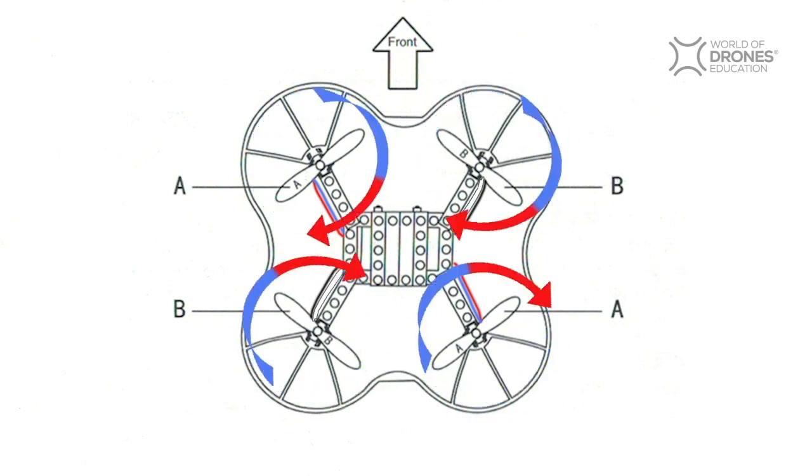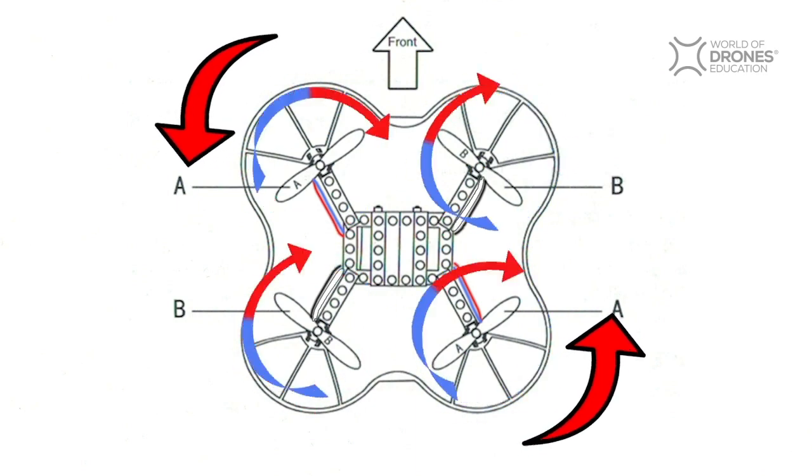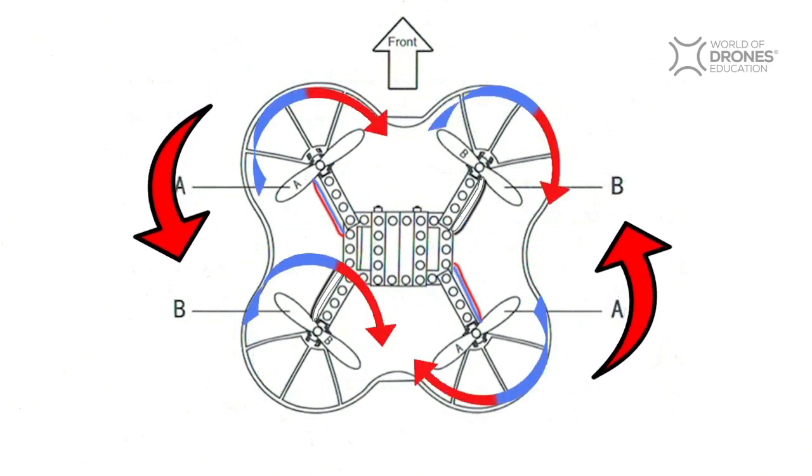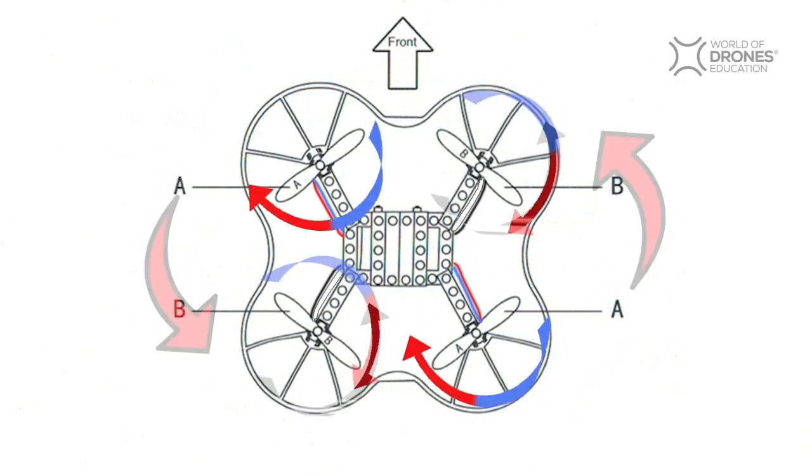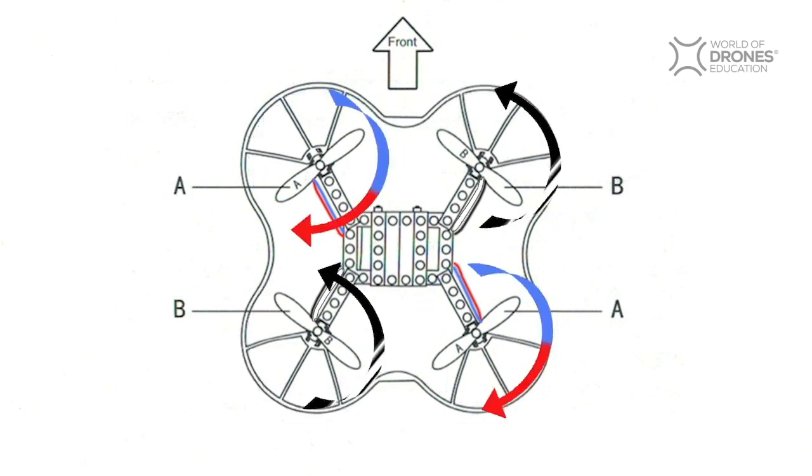So if all motors were spinning in one direction, let's say clockwise, the torque would force the drone to spin anti-clockwise on its central axis. With two motors spinning one way and two the other, that cancels that problem out.